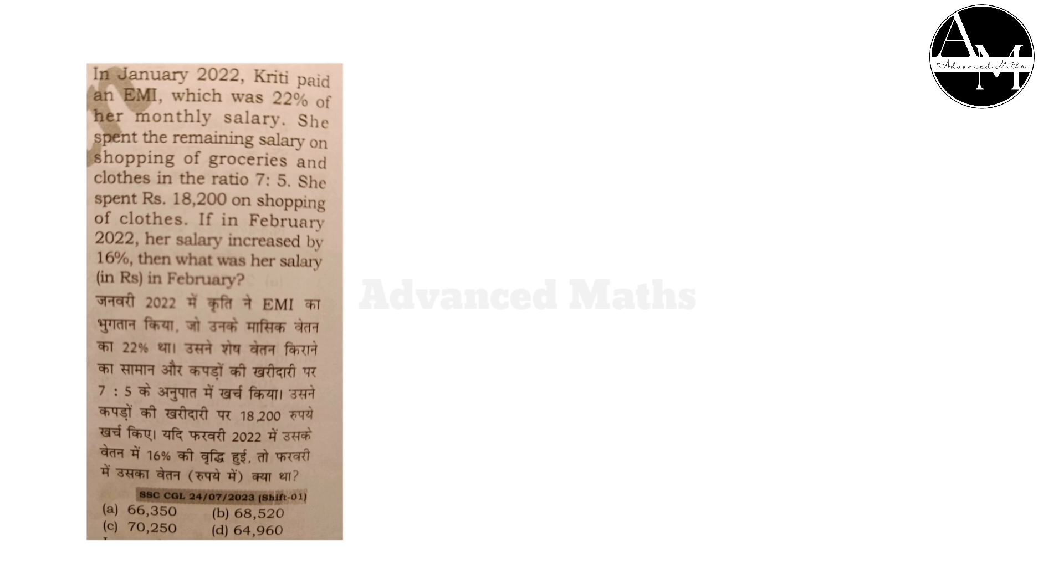The monthly salary, 22% of the salary goes to a certain expense, leaving the remaining balance for shopping of groceries and clothes. The salary is $18,200 in shopping. If you have a salary in February,